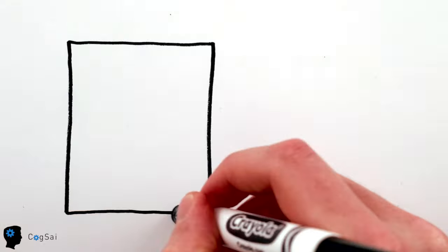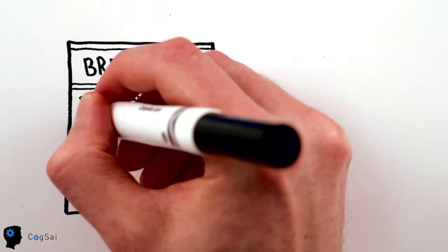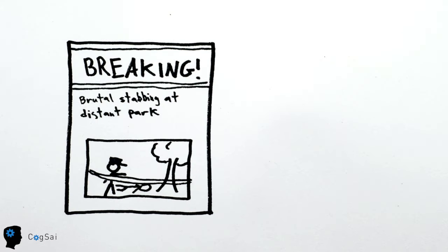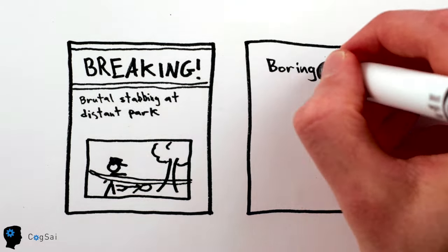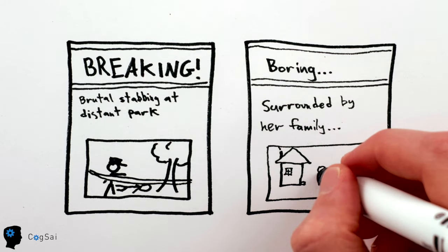Things that are more commonly and vividly shown in the media, like a violent murder, will be a lot easier to remember than things that are far more common in real life, but aren't as dramatic, like a cancer patient dying peacefully at home.